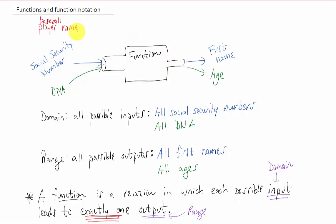Here's an example. If this machine inputs baseball player names and outputs their position, technically that wouldn't be a function because a given player could play more than one position. There's a chance that the machine would have to spit out more than one value for one given input. So that would not constitute a function.